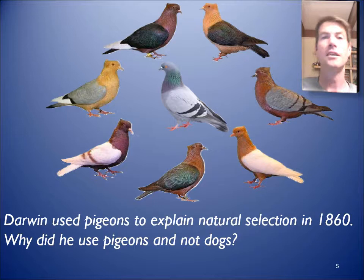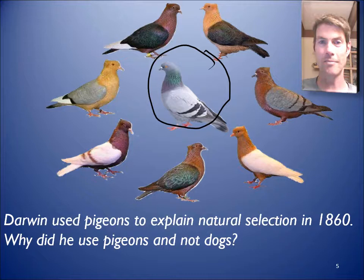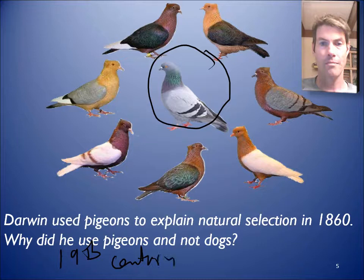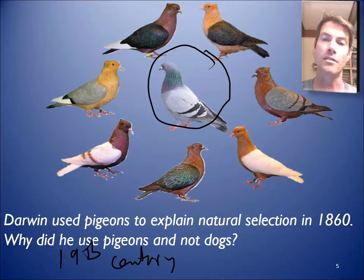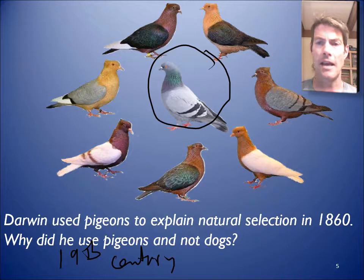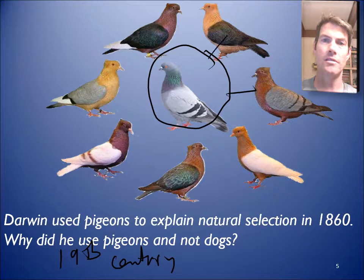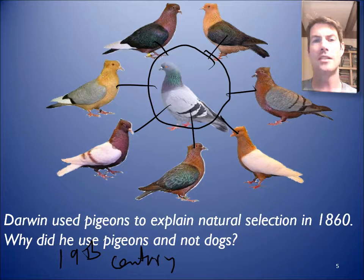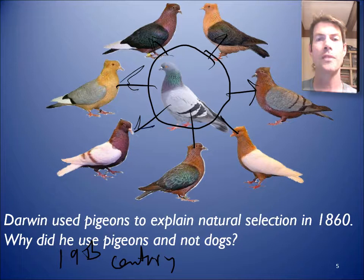So Darwin did not write anything about dogs. He talked about pigeons. Now, why did he use pigeons and not dogs? It's because pigeons were kind of like the dogs of the 19th century. Most people didn't have the space and money to take care of dogs. Pigeons you can have on a rooftop and they're a little easier to take care of in 19th century England. So a lot of people would breed pigeons and you can see all these different color combinations. We don't breed pigeons now, so you just know the wild pigeon.